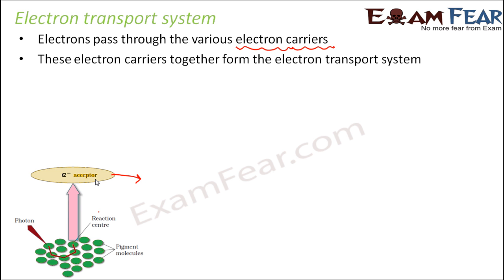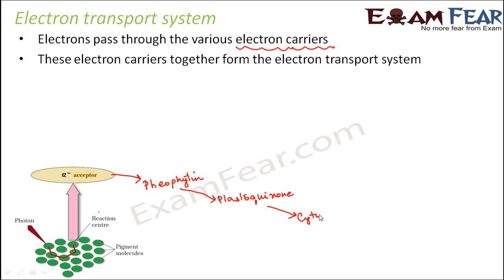Once the electrons are picked up by the primary acceptor, they pass to a molecule called pheophytein. From pheophytein, they pass to another molecule called plastoquinone. From plastoquinone, they pass to the cytochrome complex. From the cytochrome complex, they pass to plastocyanin. And from plastocyanin, the electrons reach PS1 — that is, photosystem 1.